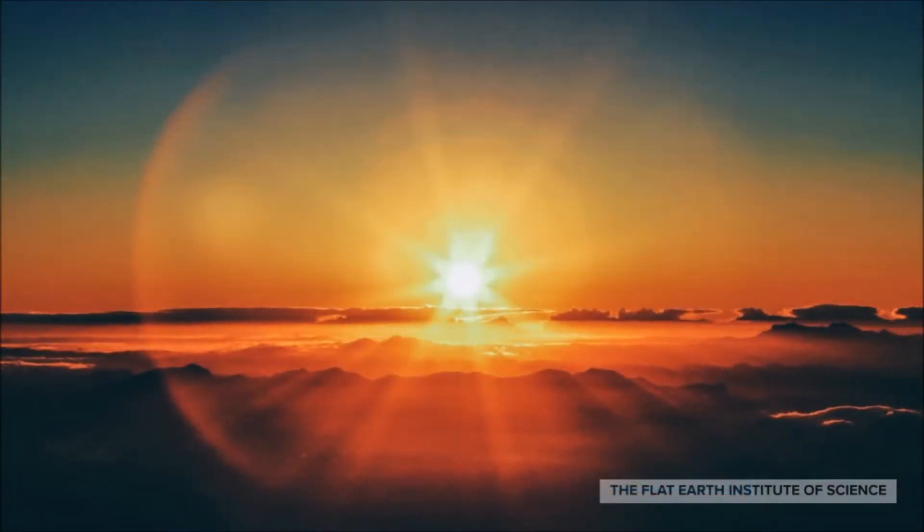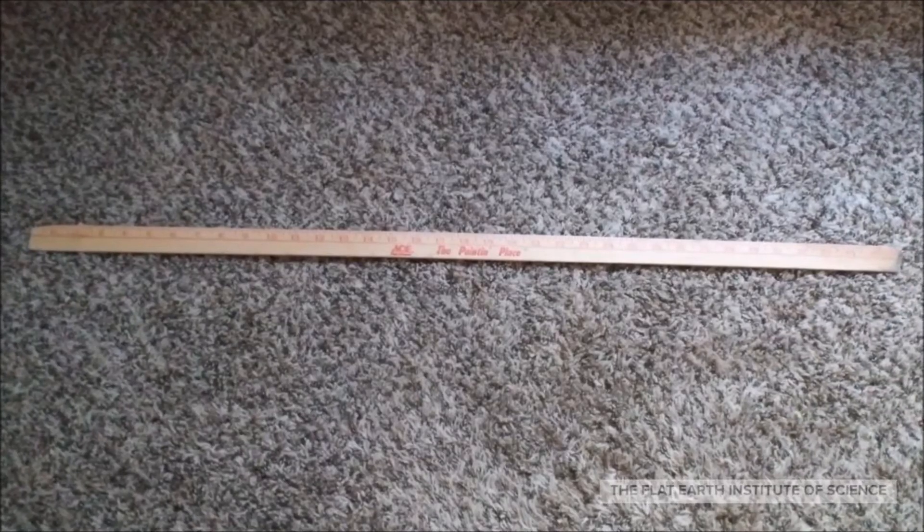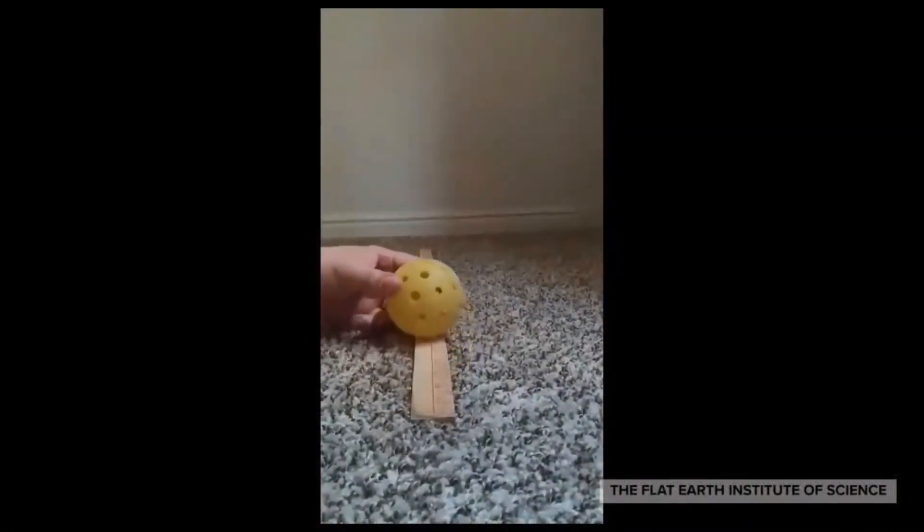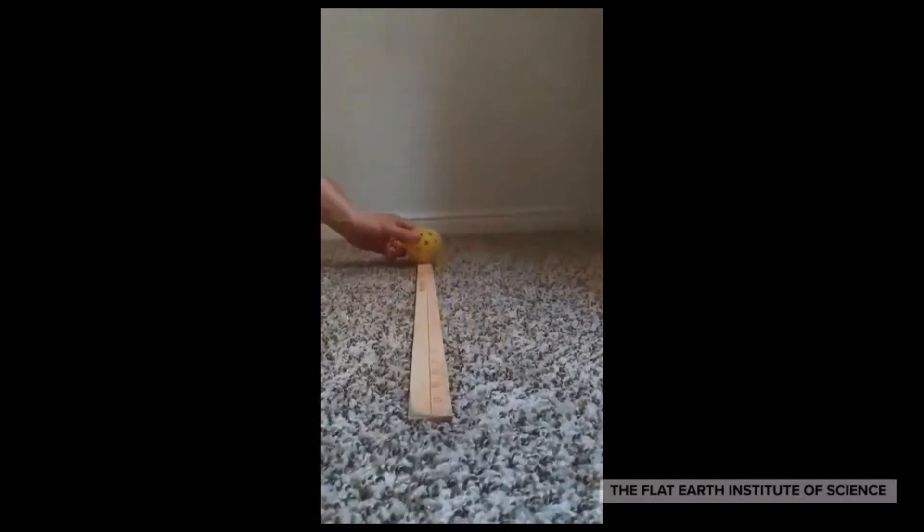Now there is something else I want you to take into consideration. Here's a yardstick on the floor. Now watch this ball shrink as we move it across the yardstick. This is what globe earthers claim the sun should be doing on a flat earth.